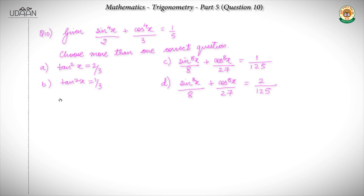We have question 10 over here, which says: given that sin⁴x/2 plus cos⁴x/3 equals 1/5, where the options given are: (A) tan²x equals 2/3, (B) tan²x equals 1/3, (C) sin⁸x/8 plus cos⁸x/27 equals 1/25, and (D) sin⁸x/8 plus cos⁸x/27 equals 2/25.